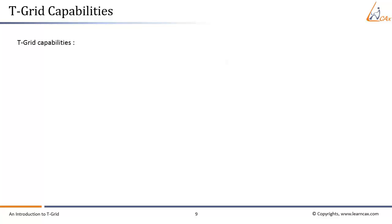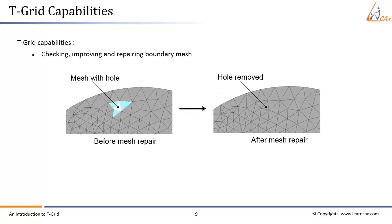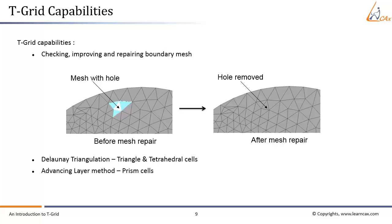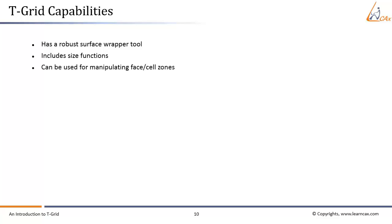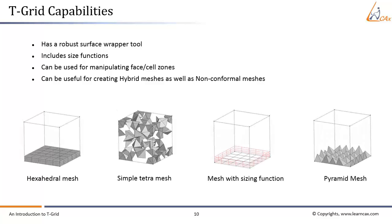Being a highly automated tool, T-Grid possesses the following capabilities: it has tools for checking, improving, and repairing boundary mesh; it uses Delaunay triangulation for generating triangle and tetrahedral cells; it uses the advancing layer method for prism cell generation; it has a robust surface wrapper tool; it provides users with size functions; it can be used for manipulating face oblique cell zones; and T-Grid can create hybrid meshes as well as non-conformal meshes. Below are pictorial representations of these capabilities.